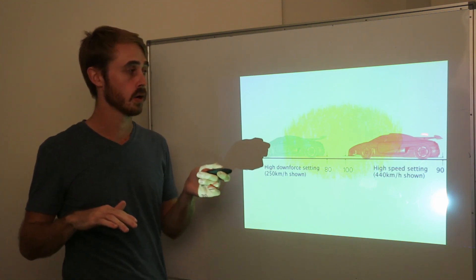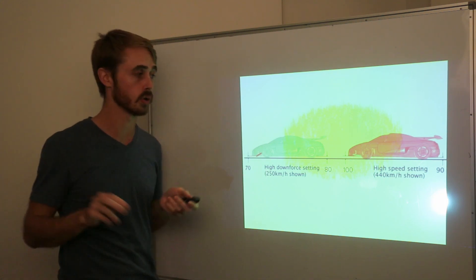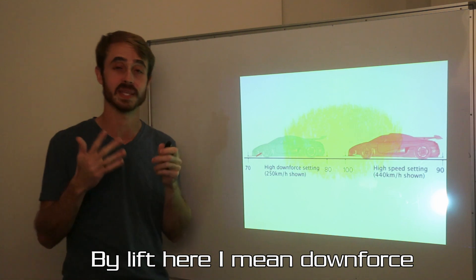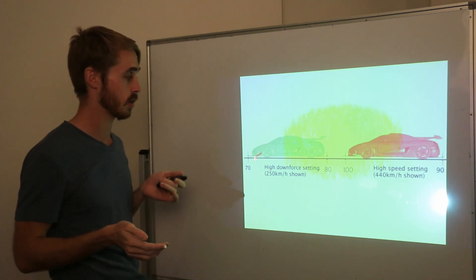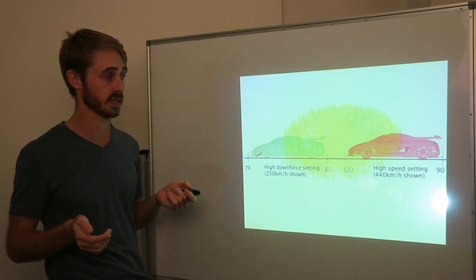When you rake back a bit it's going to lower the angle of attack of all your wing and everything and it's going to reduce the effective angle of attack of your floor so you're going to be making less lift which means less induced drag. Obviously you've got the inverse in high downforce setting which is why you see F1 cars with rake and stuff like that.